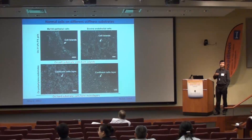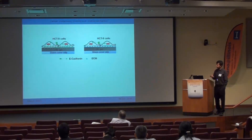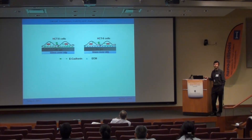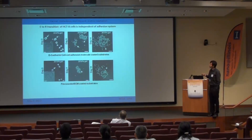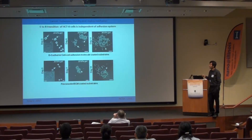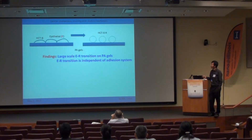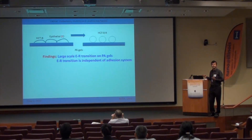Since HCT8 cells significantly change their morphological phenotype on extracellular matrix polyacrylamide gels, we asked whether this morphological transition depends on cell-to-gel adhesion. We replaced ECM adhesion with E-cadherin — a cell-cell adhesion molecule — instead of fibronectin or collagen, and asked whether we still see this morphological transition on gels. The results are interesting: on E-cadherin coated gels, they form islands and undergo the morphological transition at more or less the same time as on ECM-fibronectin coated gels. This confirms the transition is independent of the type of cell-to-gel adhesion.